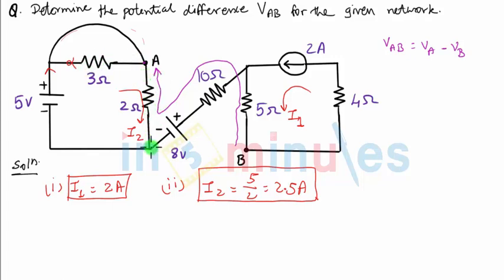Now when it comes to this particular node it has got two options. It can travel through this path and it can also travel through this path. The question is will it split into two currents or will it completely flow through either this branch or this branch? Let's answer this question. When I2 which is 2.5 amperes comes to this particular point, it is important to note that it cannot split into two currents.